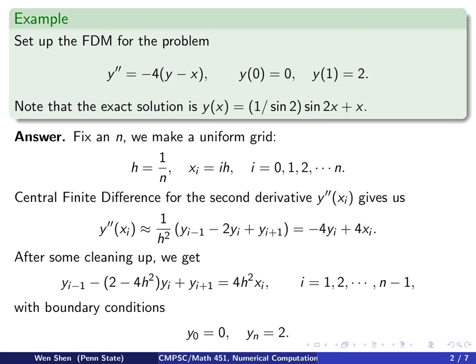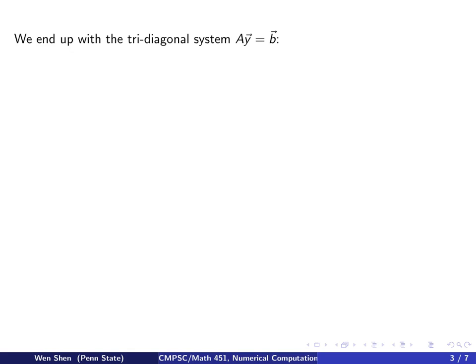So we see that here we have n minus 1 equations. The first equation touches the boundary y0 and the last equation touches the boundary yn. And these are three consecutive indexes. So we see that this will end up in a tridiagonal system. We always get tridiagonal system.